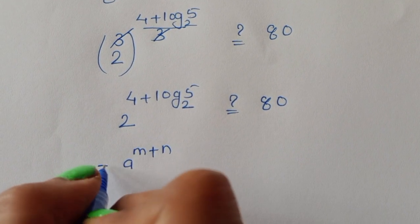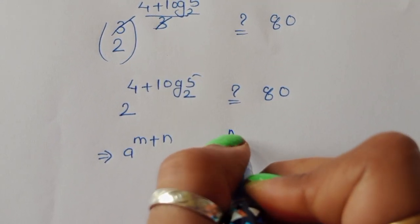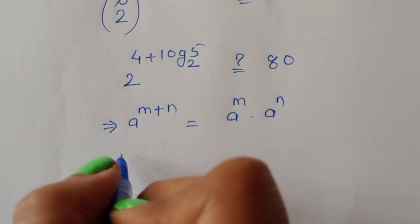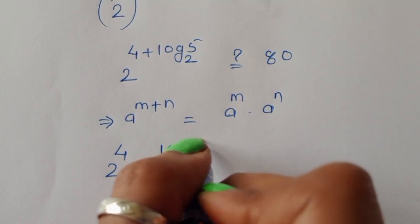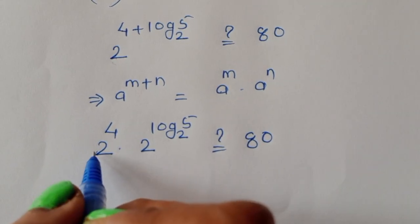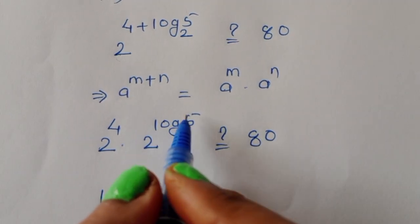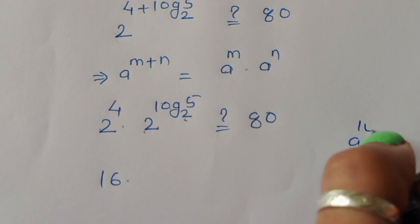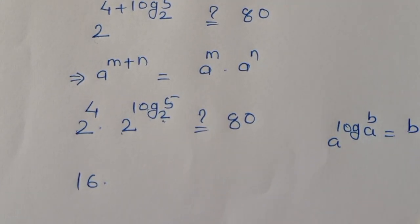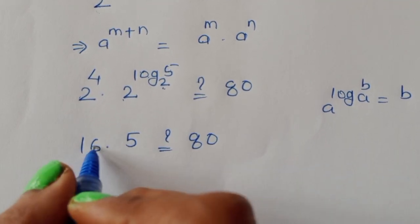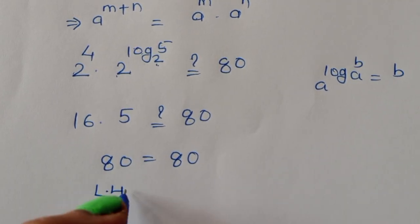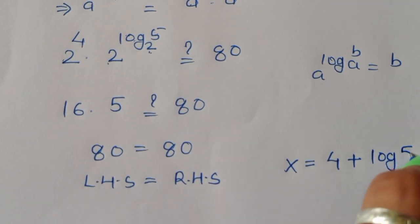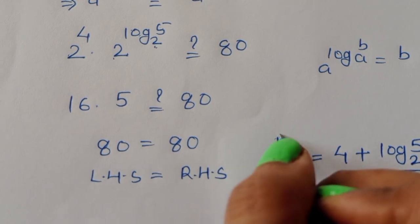Using the power rule, (2³)^((4 + log₂5)/3) = 2^(4 + log₂5). The 3s cancel. Now using the formula a^(m+n) = a^m × a^n, we write 2^4 × 2^(log₂5). Since 2^4 = 16 and using a^(log_a(b)) = b, we get 2^(log₂5) = 5. So the result is 16 × 5 = 80. LHS equals RHS, confirming x = (4 + log₂5) / 6 is correct.